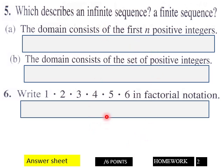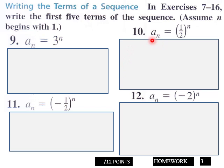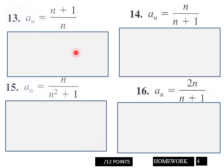Page three, write the first five terms of each one of these sequences in your response boxes there. You got 12 points here, page three. Page four, write your first five terms for these sequences, 12 points here, page four.